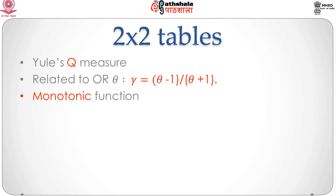For 2 by 2 tables, there is a simplification of the gamma measure. The gamma measure for the 2 by 2 case is also referred to as Yule's Q, and it is related to the odds ratio. It can be shown that gamma = (π_11 π_22 − π_12 π_21) / (π_11 π_22 + π_12 π_21), which simplifies to (θ − 1) / (θ + 1) where θ is the odds ratio. Thus, gamma is a monotonic function of theta that transforms from the 0-to-infinity scale to the −1-to-1 scale.